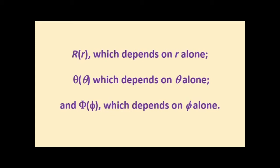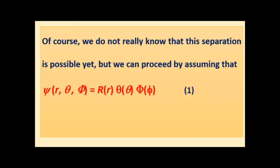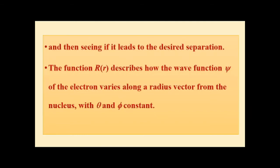Theta of theta, which depends only on small theta. So we have three functions: capital R, which is a function of small r; capital Theta, which is a function of small theta; and capital Phi, which is a function of phi only. We proceed by assuming that the product of these three functions — capital R, capital Theta, capital Phi — equals the total wave function psi used in the last video's Schrödinger equation for the hydrogen atom.